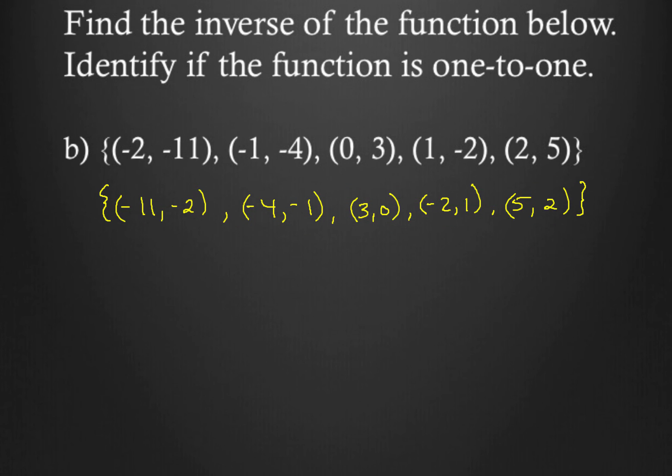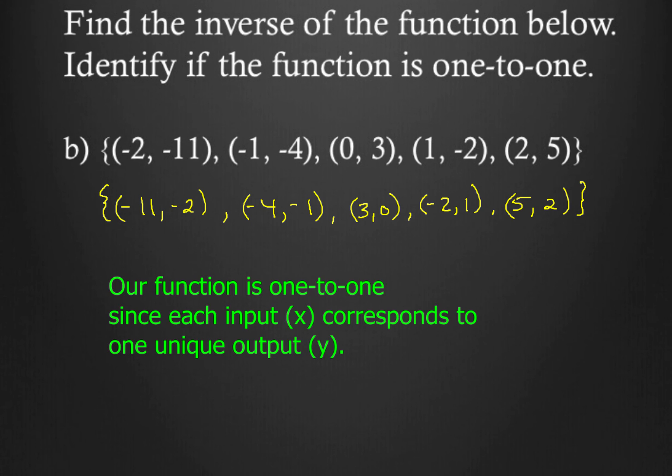So now we've got a little bit of justification to write for this. And how do you write that, you ask? Don't worry, Muscarella will show you how to do that. There it is. Our function is one-to-one since each input (x) corresponds to one unique output (y). That's it. That's all you got to write for that.